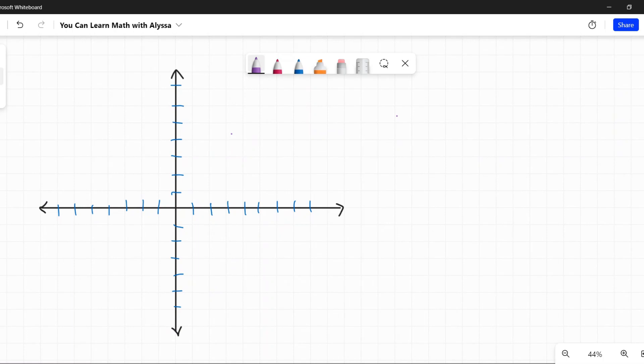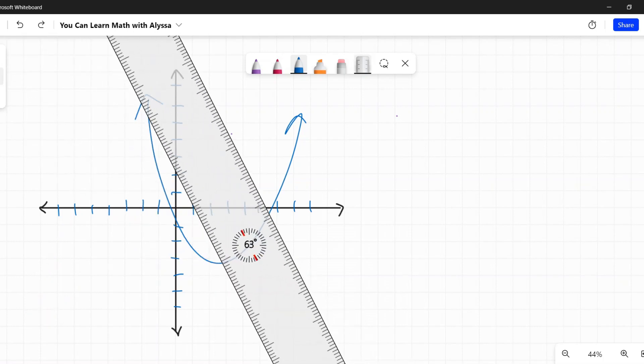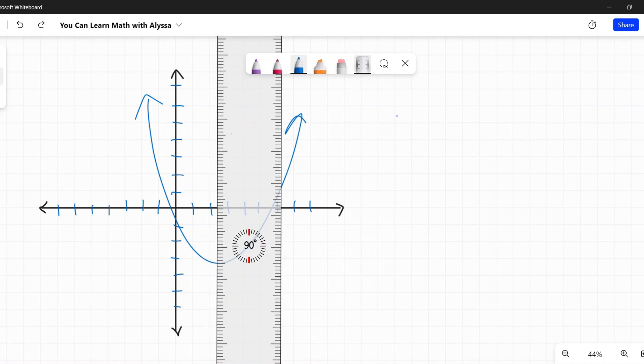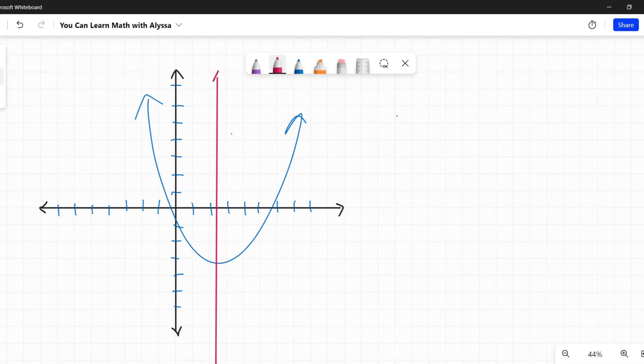But unfortunately it's nothing quite that cool. What it is instead is when we're talking about a parabola, which either looks something like that or that is our general shape of a parabola, and we're referring to a straight line that if we draw it would perfectly cut this in half.